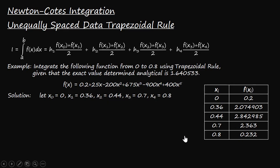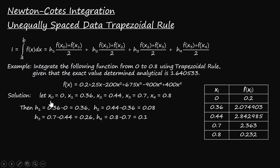The length of each sub-interval is computed as follows: h₁ = x₁ − x₀ = 0.36 − 0 = 0.36; h₂ = x₂ − x₁ = 0.08; h₃ = x₃ − x₂ = 0.26; and h₄ = x₄ − x₃ = 0.1.